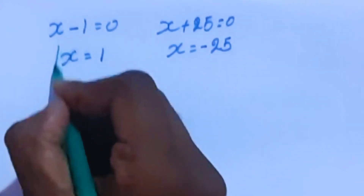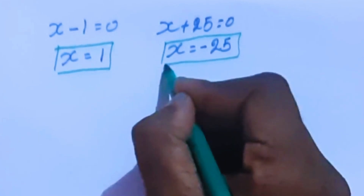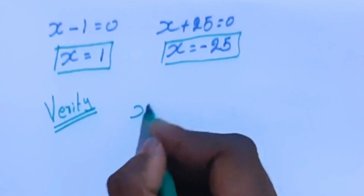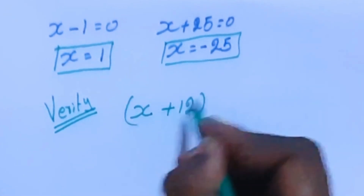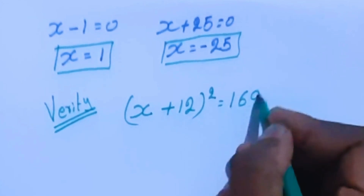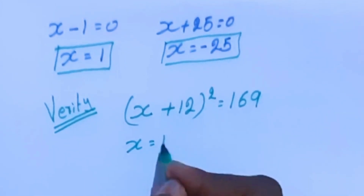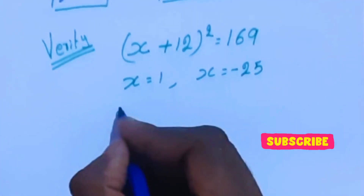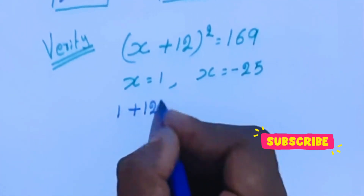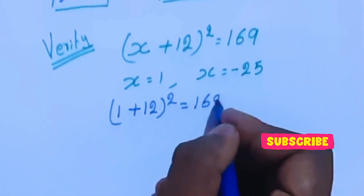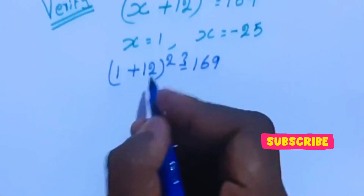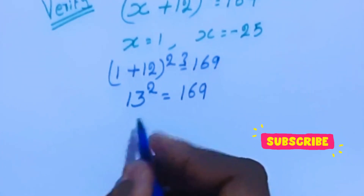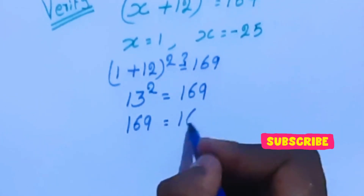In all three methods, we have the same answer. Now we are going to verify this. The original equation is x plus 12 whole square equal to 169, with x equal to 1 and x equal to minus 25. Substituting x equal to 1: 1 plus 12 whole square equal to 13 square equal to 169. So LHS equals RHS.